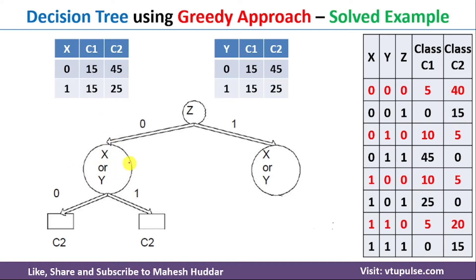If we consider X as the node under Z equals 0: X has two branches, X equals 0 and X equals 1. When X equals 0, the error is 15 and the maximum correct classification is 45, which corresponds to class C2 — so the label is C2. When X equals 1, the error is 15 and the correct classification is 25, which is also C2 — so that label is C2 as well.